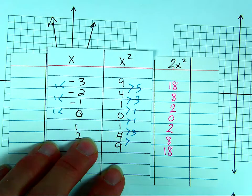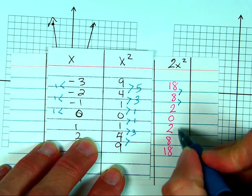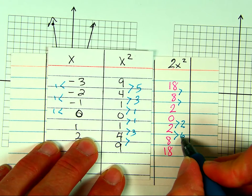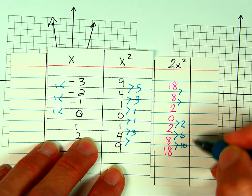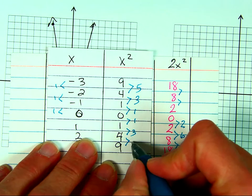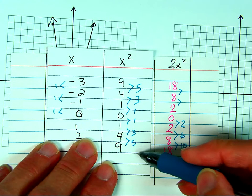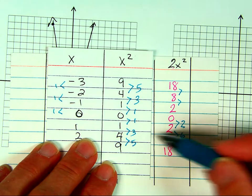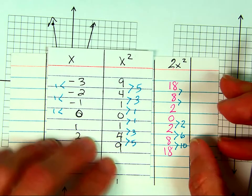How do these compare with the 1, 3, 5 of x squared? You see 2, 6, 10 — they're doubled! Why are they doubled? Because there's a 2 right there as our A value.